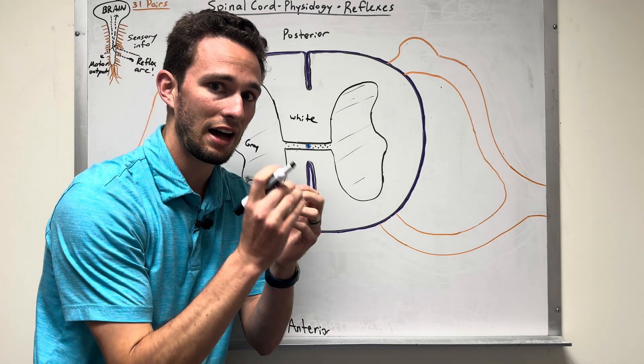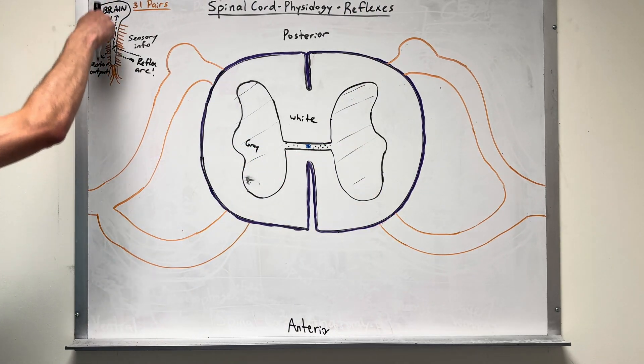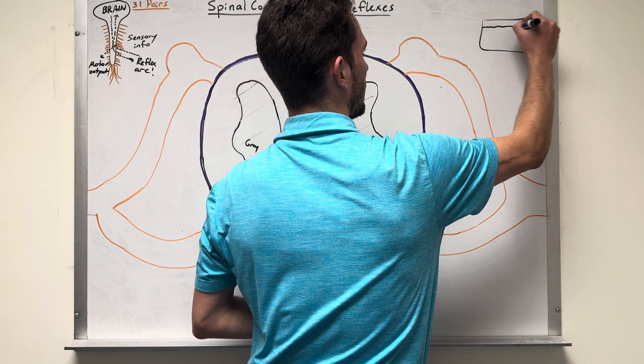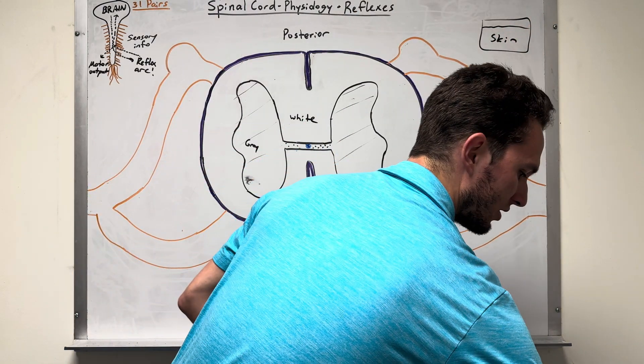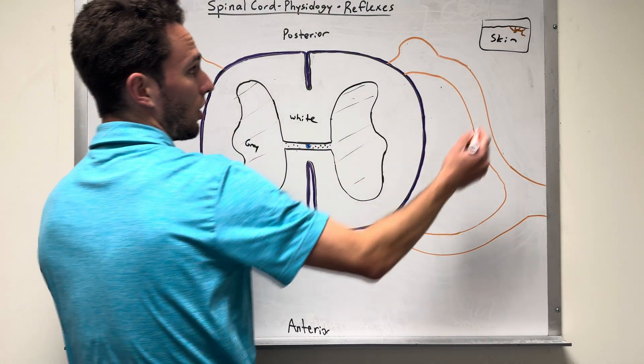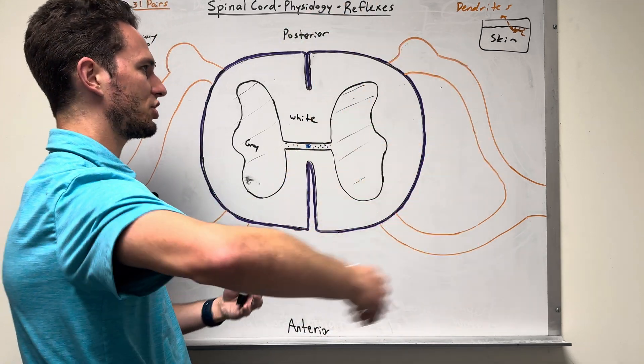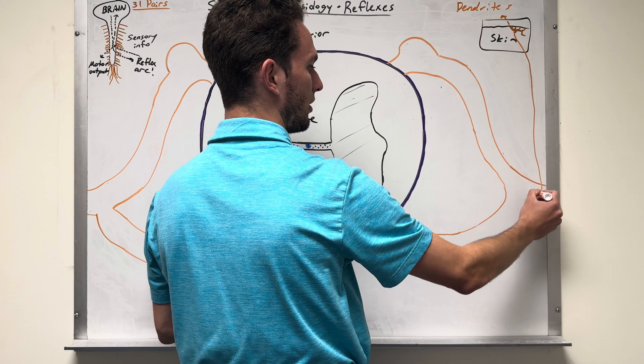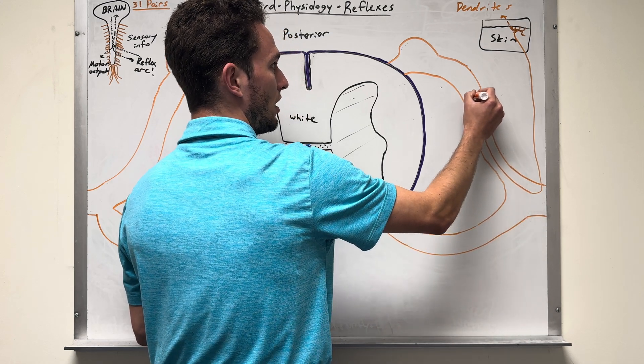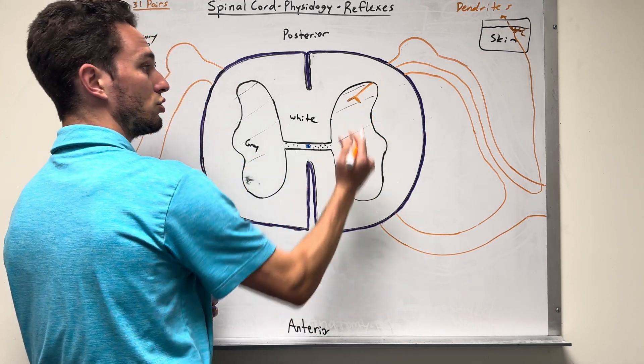So we know gray matter is basically a lot of interneurons. And then white matter is going to be these long tracks where we're going up or down the spinal cord. So let's just take an example of say we feel something in the skin. So here's going to be the skin right here. And we have things called free nerve endings in the skin that will detect different stimuli in that epidermal and dermal layer. So these are actually, we can label them as dendrites, the detecting parts of the neurons. And when they detect some sort of stimulus like pressure, all of that will be sent back eventually through the spinal nerve.